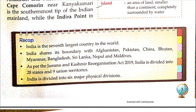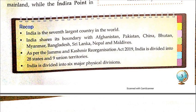Recap: India is the 7th largest country in the world. India shares its boundary with Afghanistan, Pakistan, China, Bhutan, Myanmar, Bangladesh, Sri Lanka, Nepal and Maldives. As per the Jammu and Kashmir Reorganization Act 2019, India is divided into 28 states and 9 union territories. India is divided into 6 major physical divisions.